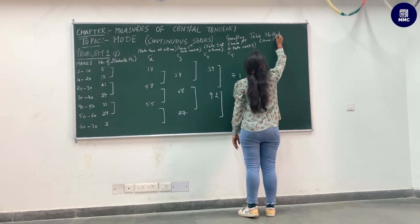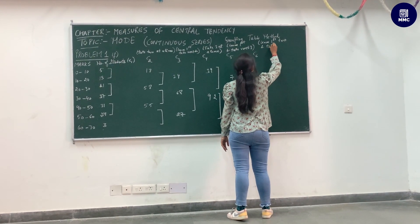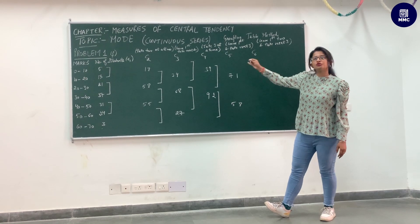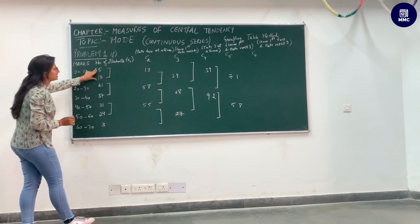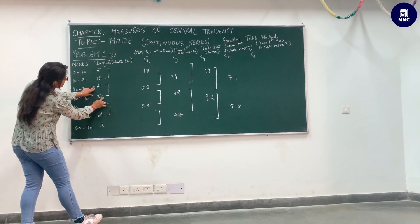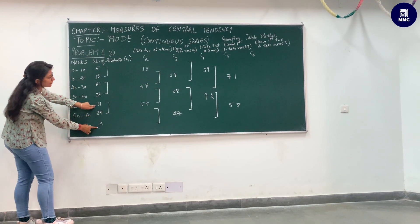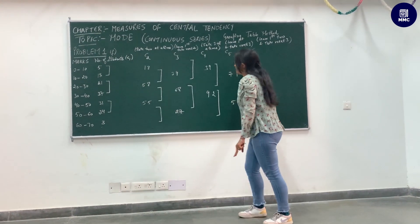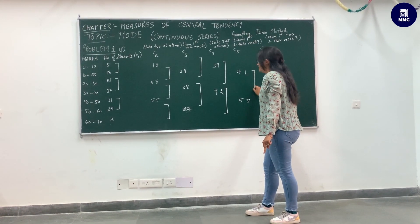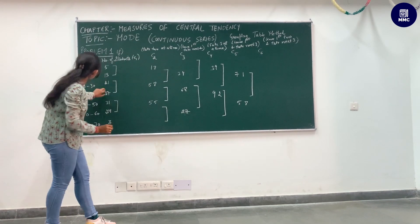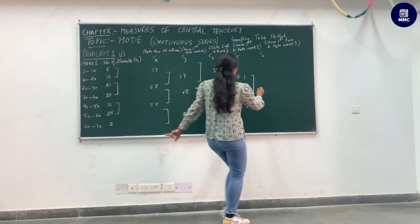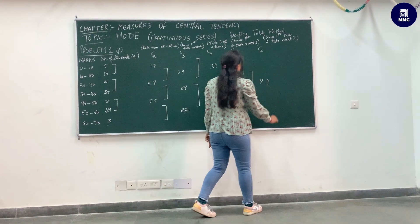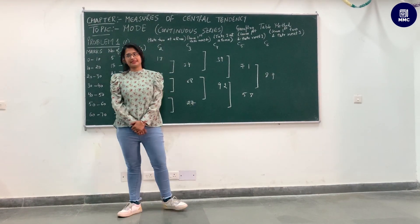For column number six, leave the first two values and take the next three. Take 21, 37, and 31. The remaining two items are excluded in the last column. Adding 21 plus 37 plus 31 gives 89. In this way we have generated column number six.